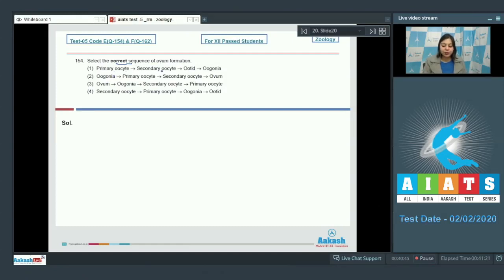Select the correct sequence of ovum formation. Number 1. Primary oocyte, secondary oocyte, ootid and oogonia. This is incorrect as the primordial cell is oogonia which forms primary oocyte which undergoes meiosis 1 to form secondary oocyte. Ootid is formed from secondary oocyte after fertilization has occurred just before the formation of ovum. So this is incorrect.